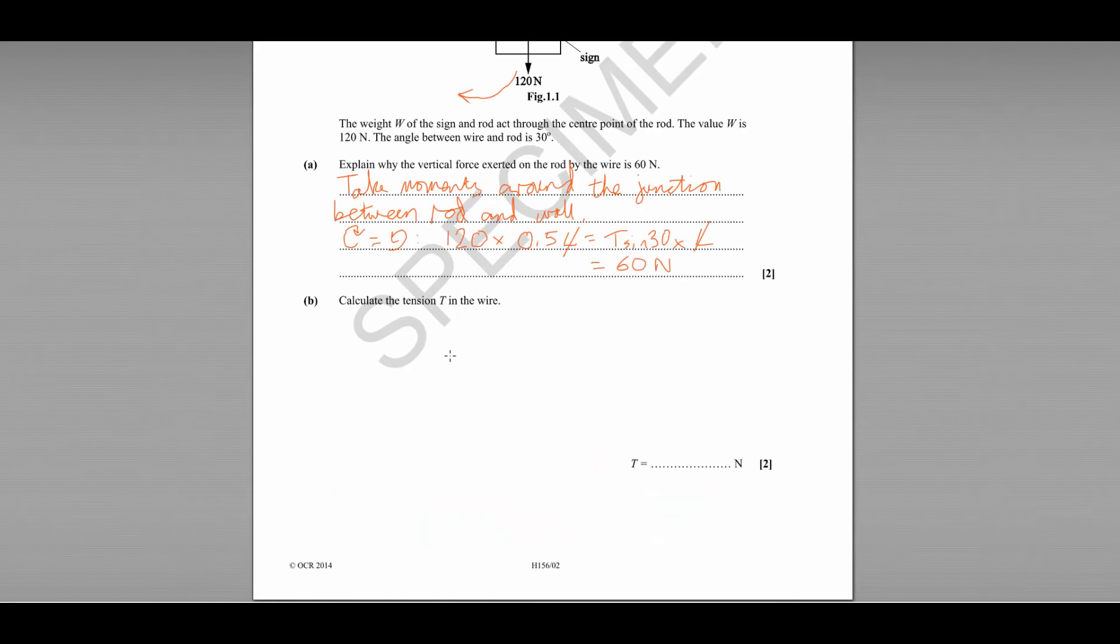Part B asks us to calculate the tension T in the wire. Well that's made a lot easier by the notation we've already used. We've already said that T sine 30 is equal to 60 newtons. T sine 30 is the vertical component of that force. So we could rearrange. We'll get T equals 60 divided by sine 30 which gives us a final value of 120 newtons because sine 30 is 0.5.